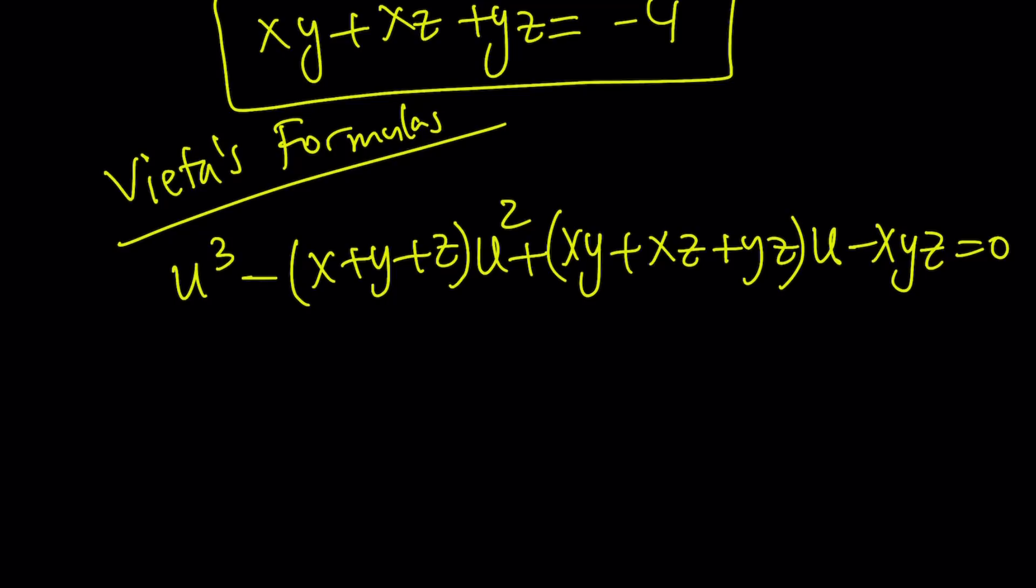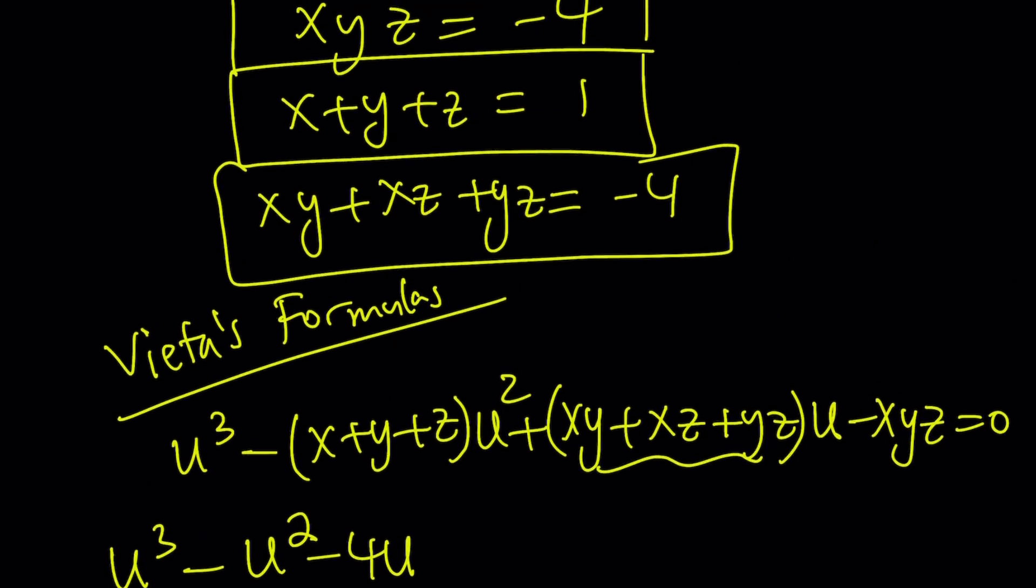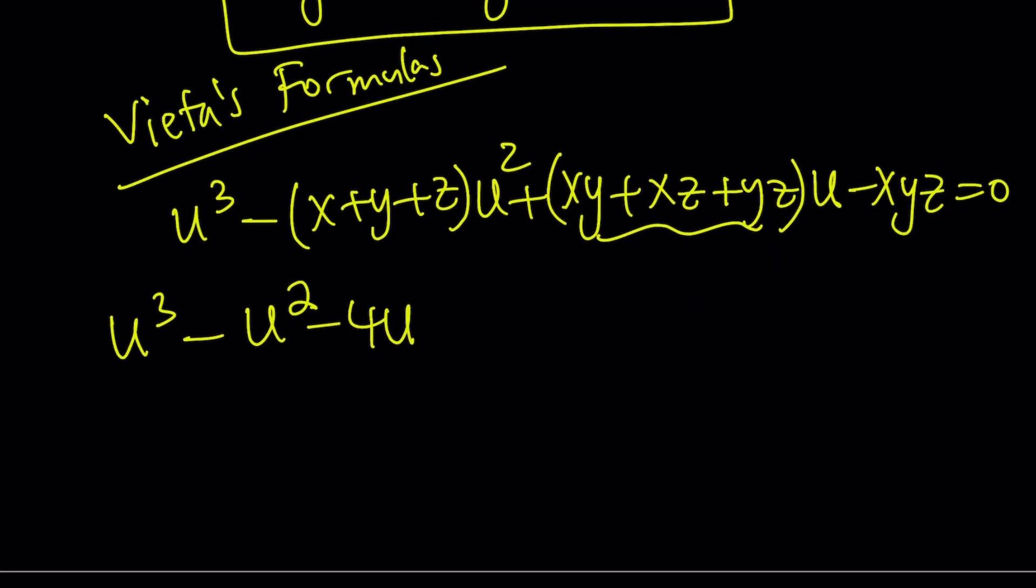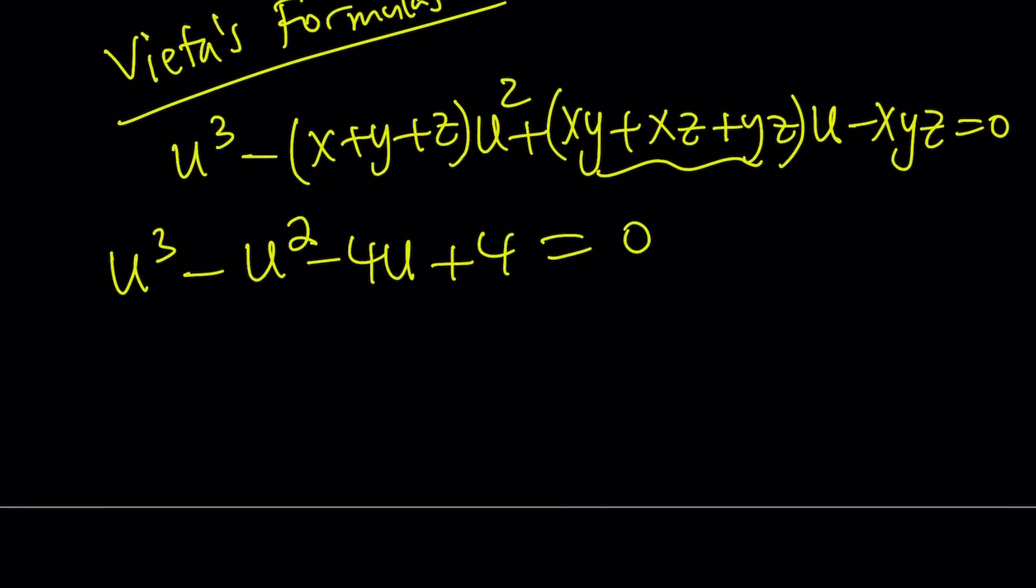Now we can go ahead and replace x plus y plus z with one. So it becomes u cubed minus u squared. And then this is negative four. So it becomes negative four u. And x, y, z, remember we just found it. It's equal to negative four. So it becomes positive four. And the whole thing equals zero. Now, this is nice because it's factorable.